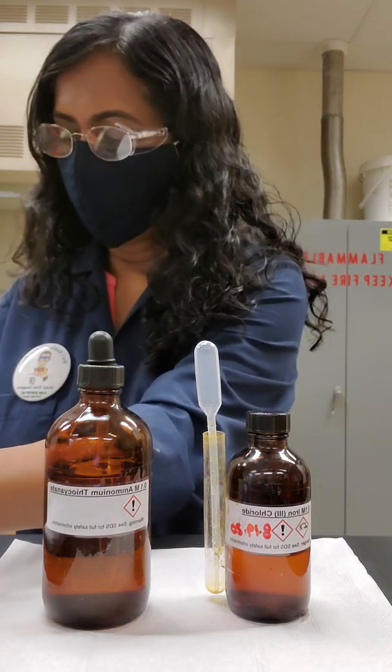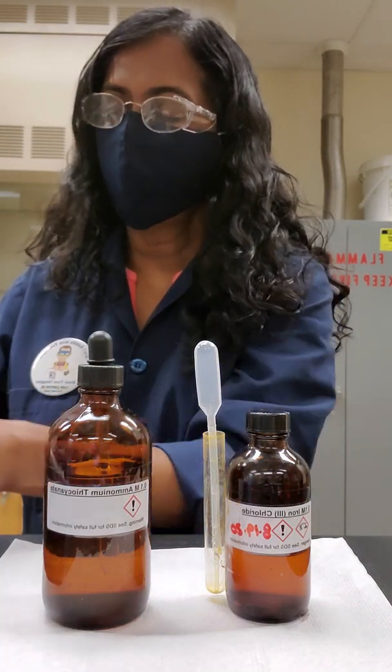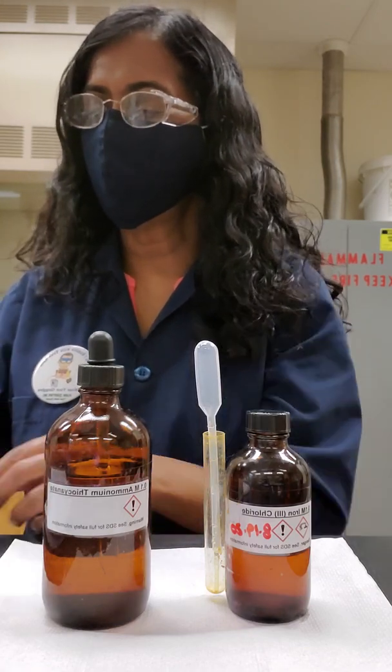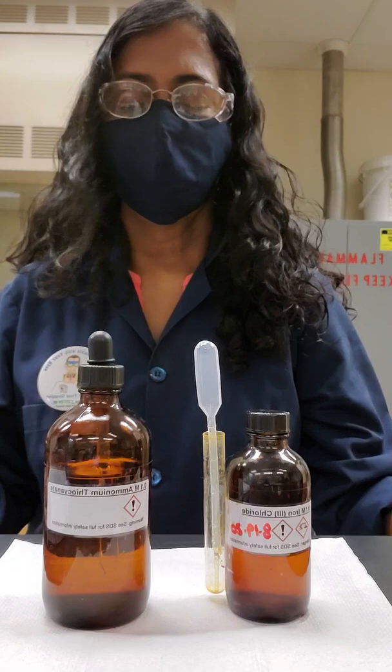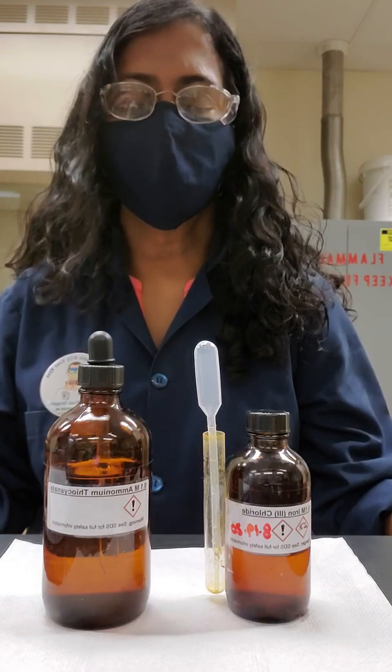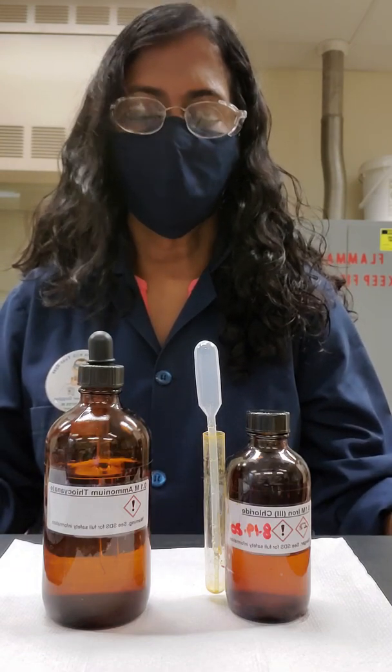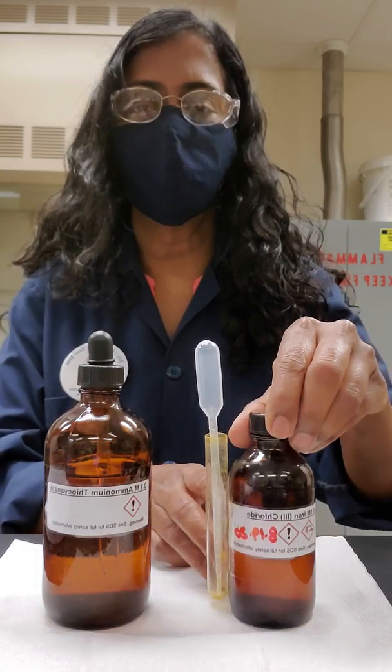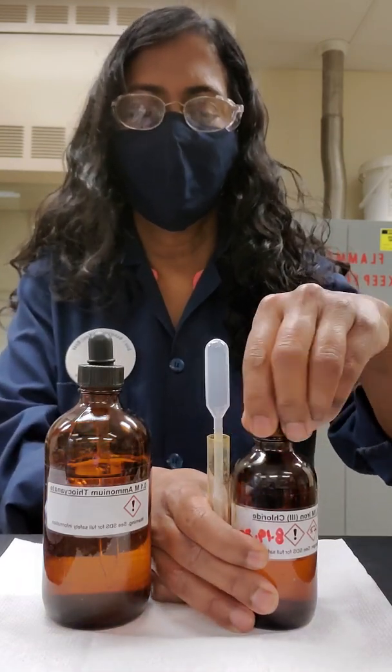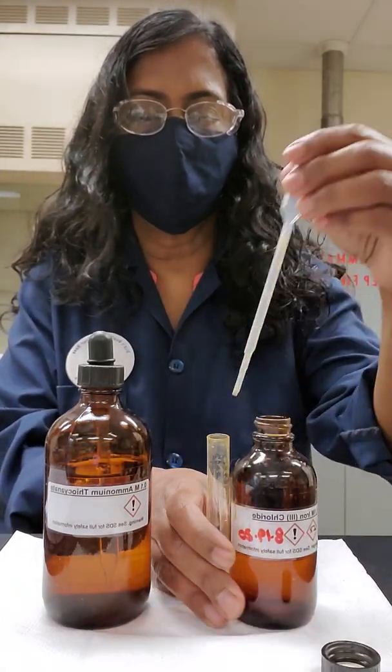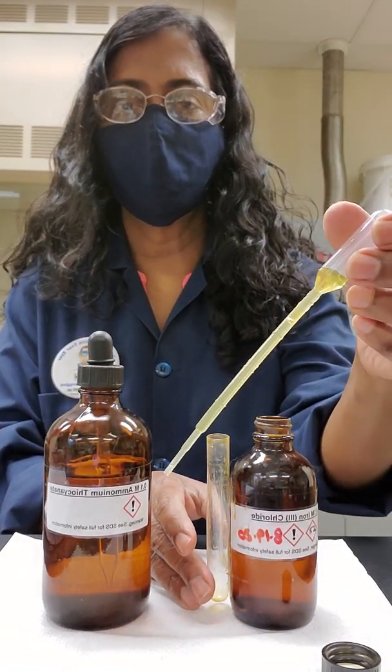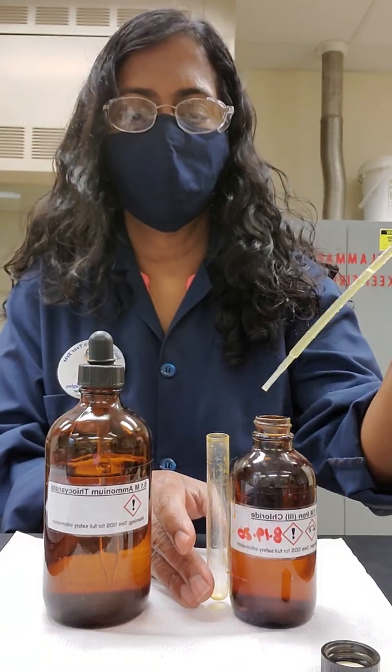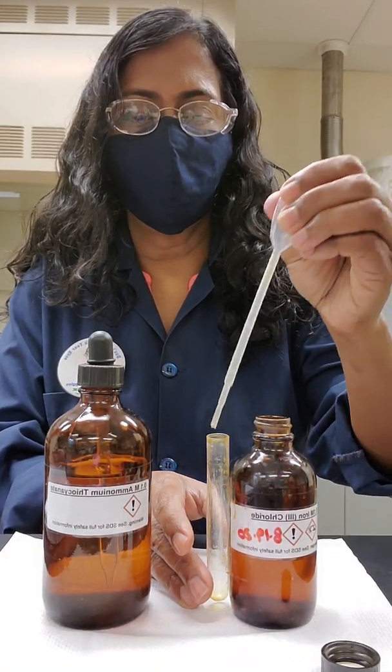If you turn to page 24, I'm going to go through the first experiment, which is an iron thiocyanate experiment. For this part, we have two reagents we are working with today. The first one is a solution of iron(III) chloride, which is in the small bottle. I'm going to show you the color of iron(III) chloride, which you want to record in your lab manual. Go ahead and record that in your lab manual.